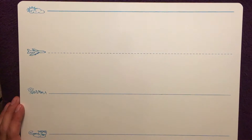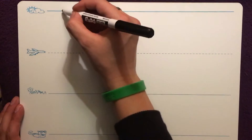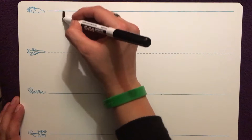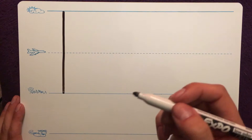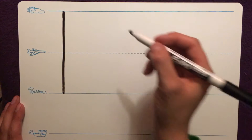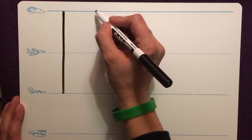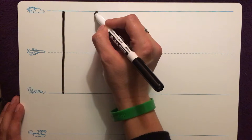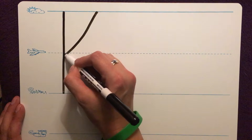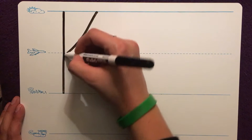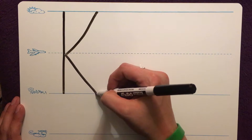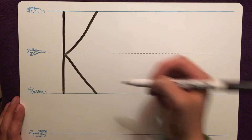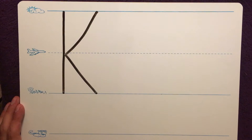Uppercase K starts on the skyline. We draw a straight line down to the grass line. Pick up your marker and leave a space on the skyline. Slide back to the plain line and slide again to the grass line. K, kite, k.